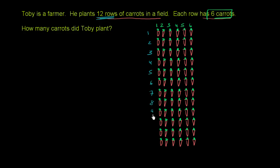7, 8, 9, 10, 11, 12. How many carrots did Toby plant? Well, you could try to count all of these carrots, but that seems a little bit crazy. These are already a lot of carrots. And especially if these were even larger numbers, it would take you forever to count it.